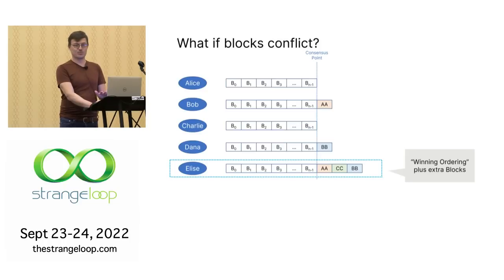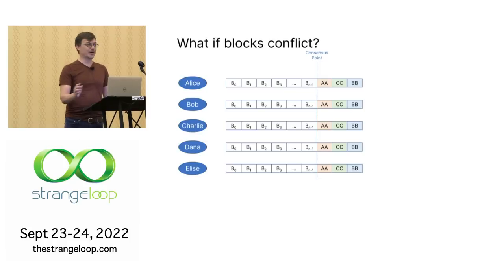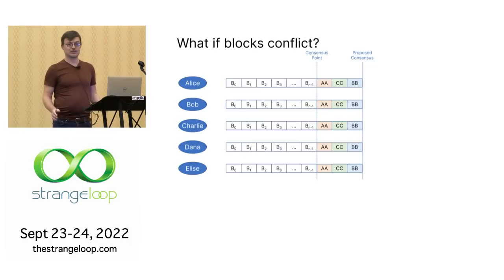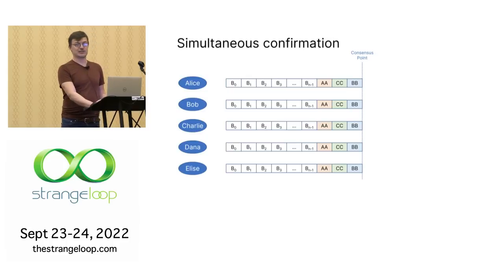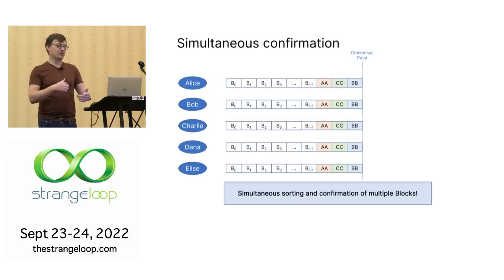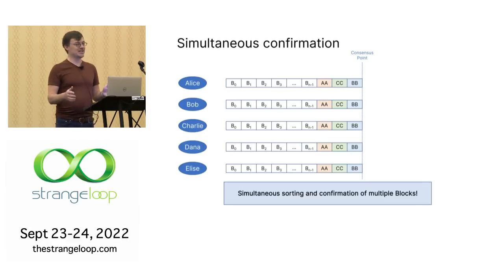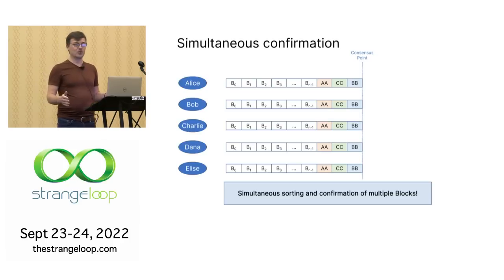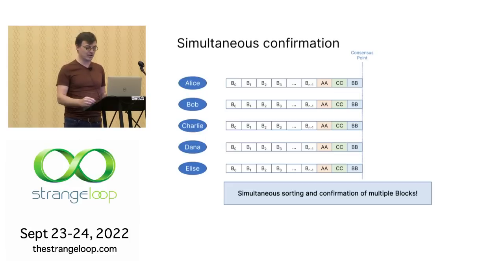Everyone can do exactly the same computation because they can all see the whole world. They all propose AA, CC, and BB. We then say this is the proposed consensus — everyone's proposing the same thing, we're in agreement, and we commit. What we're doing in one effective round of consensus is simultaneous sorting and confirmation of blocks. You could have potentially hundreds or thousands of blocks coming in simultaneously and confirm them all in one shot — you don't have to wait for previous blocks to be confirmed. You can do it all in parallel.